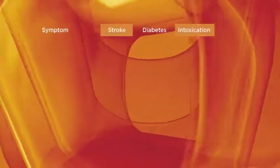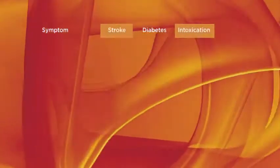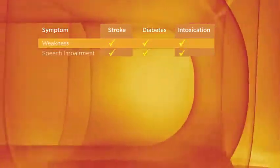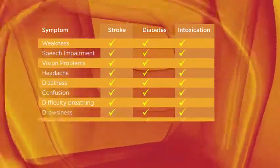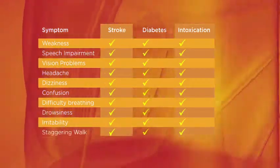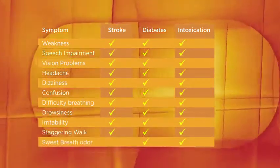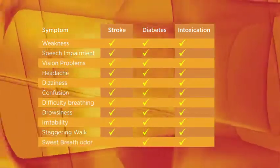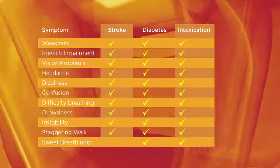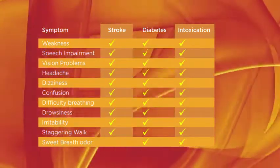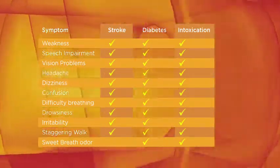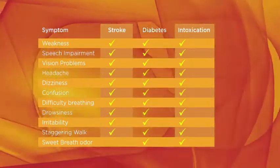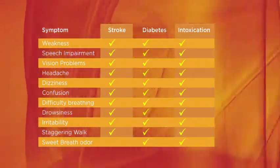In comparison, it is important to be aware of the similarities between visible physical signs and symptoms of stroke, diabetes, and intoxication. Awareness can assist law enforcement in acting immediately upon any of these medical emergencies. It is possible for someone with diabetes who is intoxicated to also be suffering from a stroke.